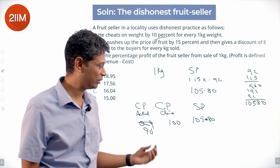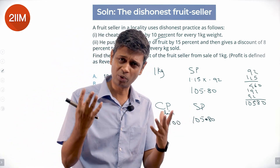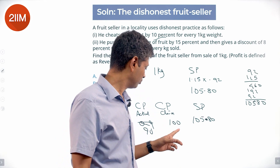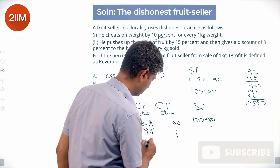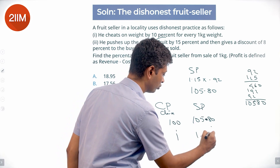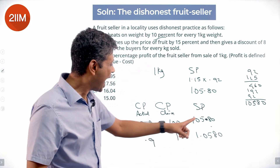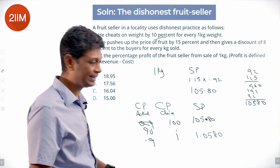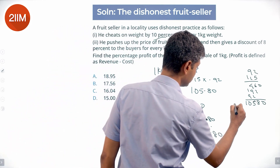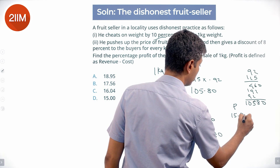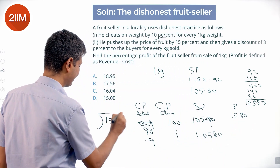Sometimes I slip into the 100 mode, sometimes I stay in the decimal mode — don't worry, we know what we're doing. Where 100 was, this will be 90; that gives 105.80. Where 1 was, 0.9 gives 1.0580. Profit = 105.80 − 90 = 15.80.